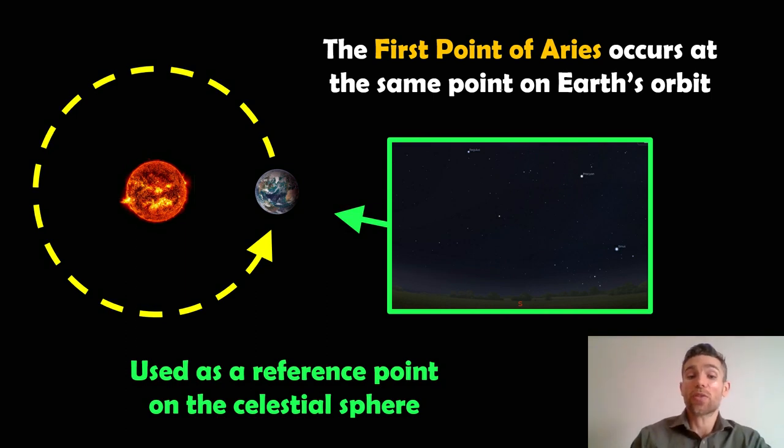This is used as a reference point on the celestial sphere. If you look at the coordinate system for an object in the night sky on the celestial sphere, that coordinate system starts at the first point of Aries. Because it's a constant point on Earth's orbit, it occurs during a particular constellation.